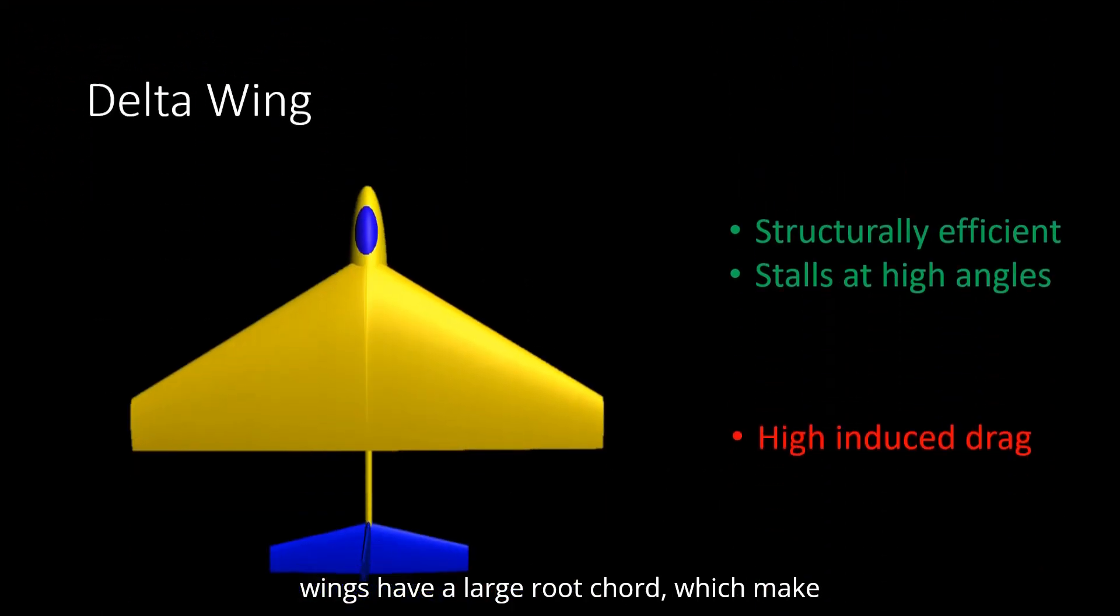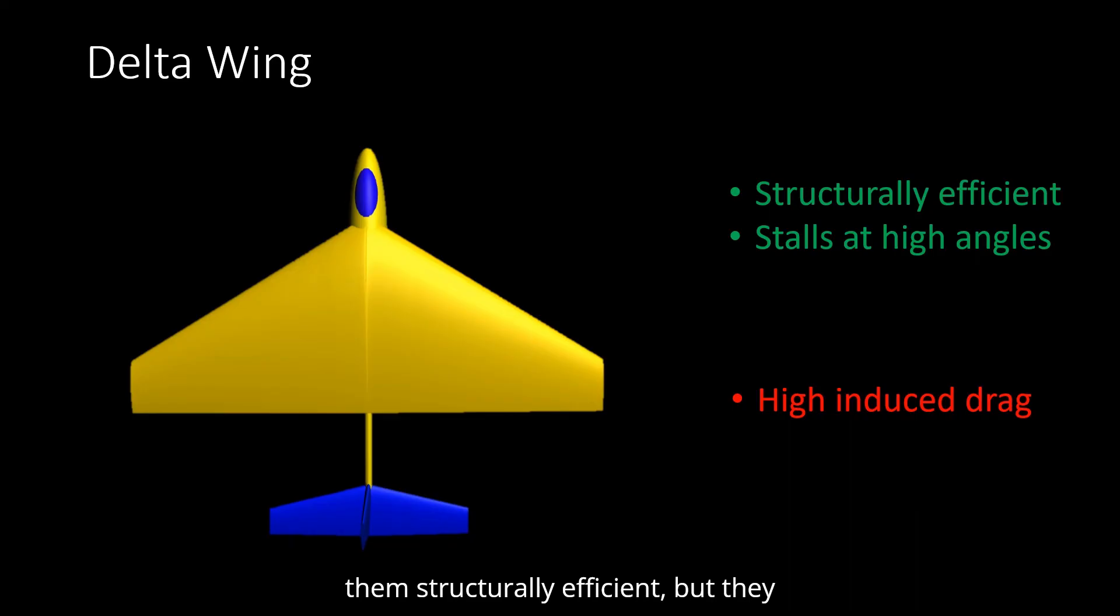Delta wings have a large root cord, which make them structurally efficient, but they suffer from high-induced drag. An advantage of this wing is that it stalls at a higher angle of attack.